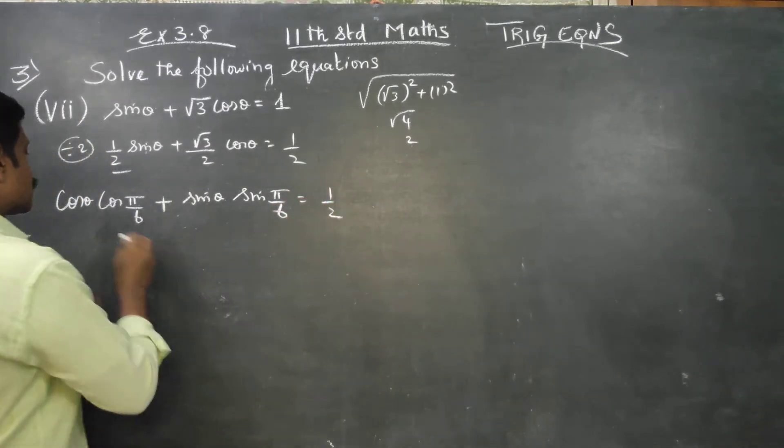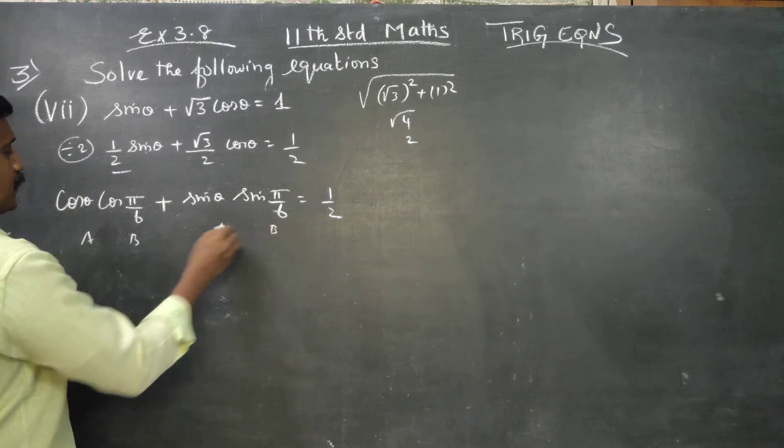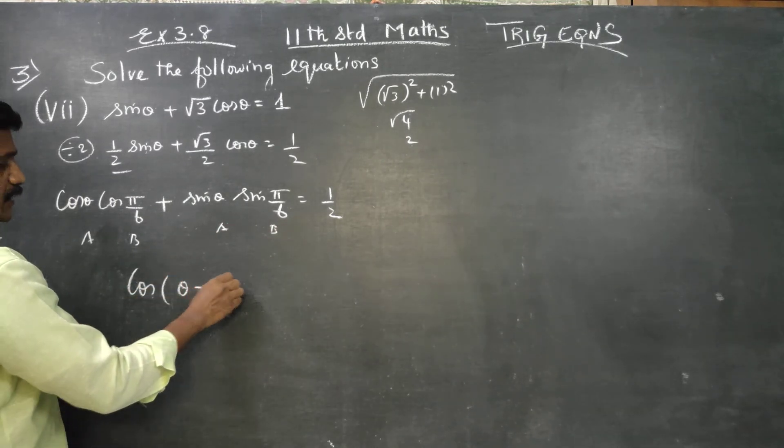This is cos a cos b plus sin a sin b, which equals cos of a minus b.